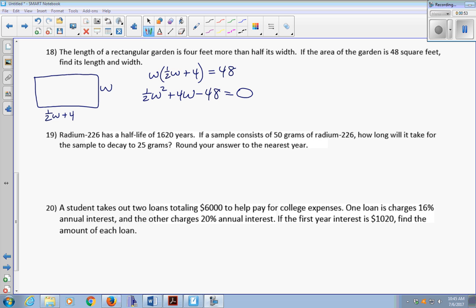This quadratic polynomial does not factor, so I'm going to use the quadratic formula. It might be easier if I don't have any fractions in here, so I'm just going to multiply both sides of this equation by 2. That way my one-half and my 2 cancel, so I just have W squared plus 8W minus 96 equals 0.